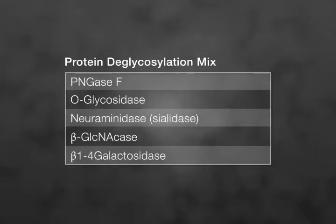The protein deglycosylation mix is a combination of PNGase F, O-glycosidase, neuraminidase (also called sialidase), beta-GlcNAcase, and beta-1,4-galactosidase.